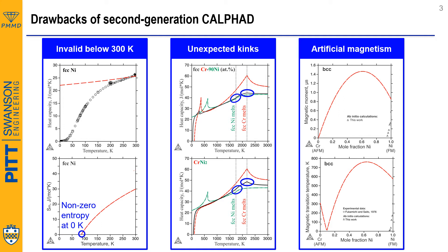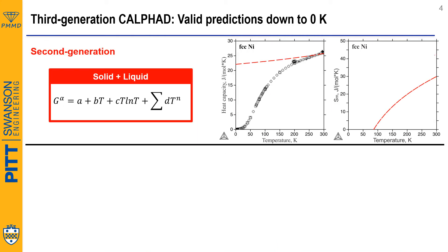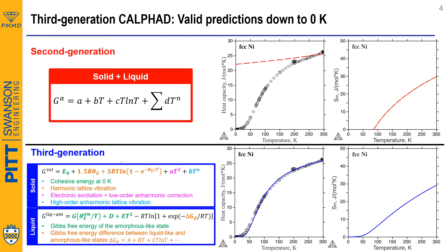Then, how does the third generation CALPHAD solve these problems? First, since the bad fitting at low temperature comes from unphysical polynomials, the third generation brings physics into the Gibbs free energy functions. For solid structures, it considers contributions from cohesive energy, that is vibration and electronic excitation. For liquid, the two-state model considers both amorphous-like and liquid-like states. Now we can see the heat capacity agrees well with experiments down to 0K, and non-zero entropy is removed.